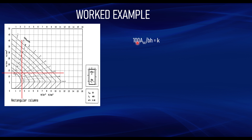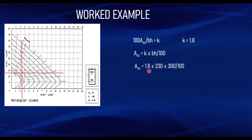Whatever is read from the chart equals 100·Asc/bh. Let k = 1.8 from the chart reading. Then: Asc = k × b × h / 100 = 1.8 × 230 × 300 / 100 = 1242 mm². This is the required area of longitudinal reinforcement.